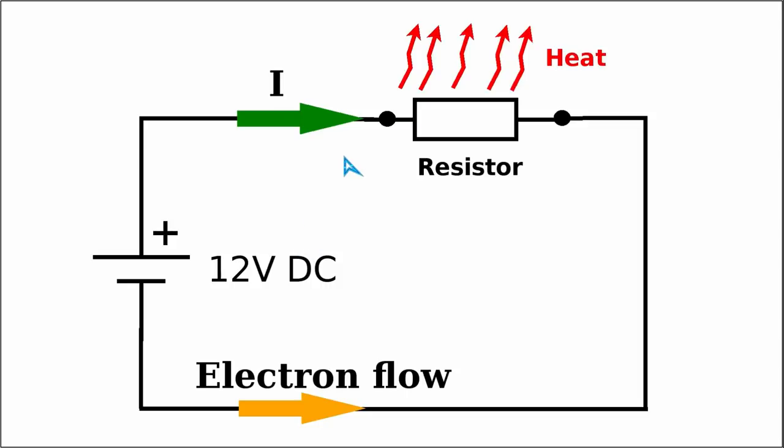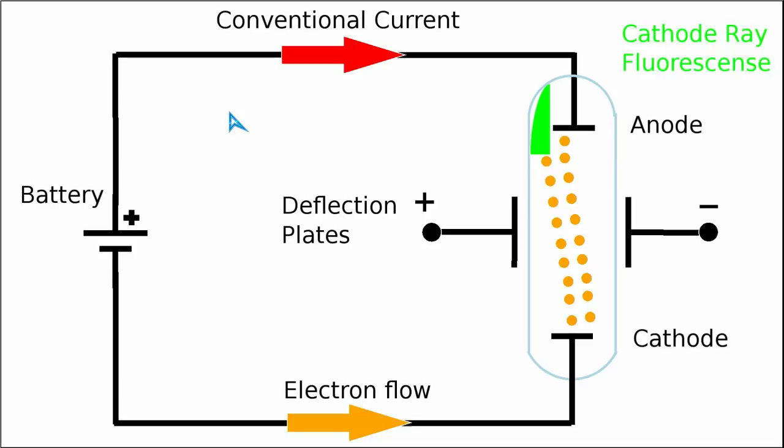Today we will look at the direction of the current in a simple electric circuit. In addition to this, a simple explanation will be provided for the cathode ray tube experiments performed by Joseph Thompson, which have led to the discovery of the electron.